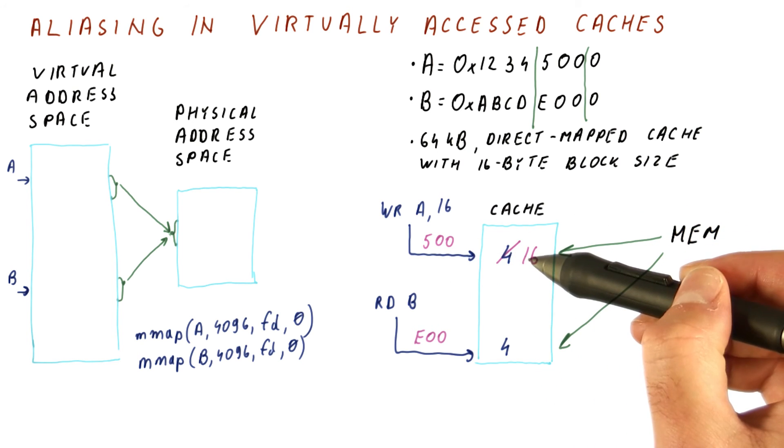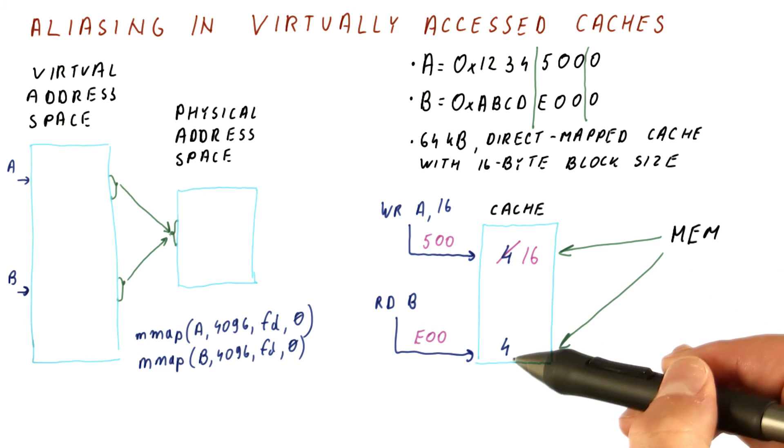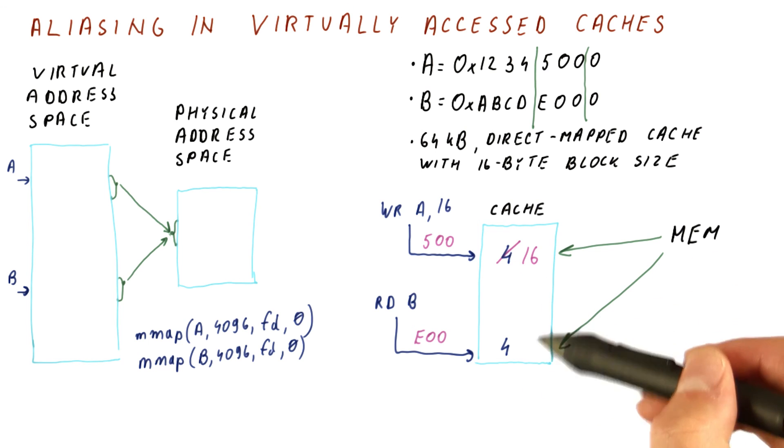Now, when we write here, we would need to do translation in order to check where else do we have the same mapping.